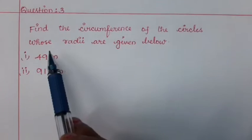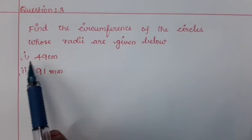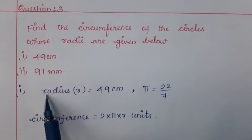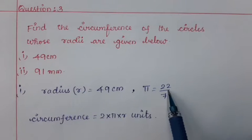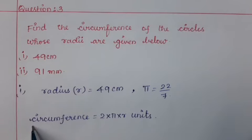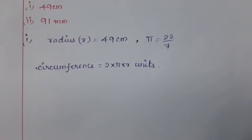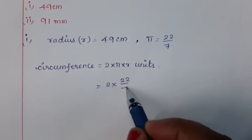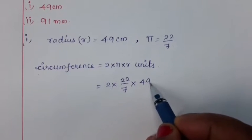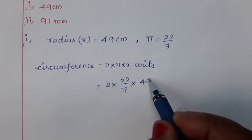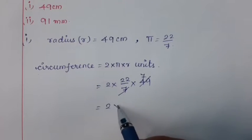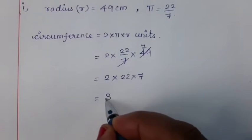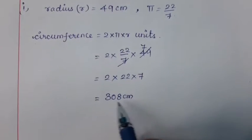Next, Question number 3: Find the circumference of the circles whose radii are given below. Subdivision 1: 49 centimeters. The given value of radius r is equal to 49 centimeters, pi is equal to 22/7, and the formula for finding the circumference is 2πr units. Using these values we get 2 into 22/7 into 49. By simplifying 49 by 7 we get 7. Then 2 into 22 into 7. By multiplying all these values we get 308 centimeters, which is the required circumference.